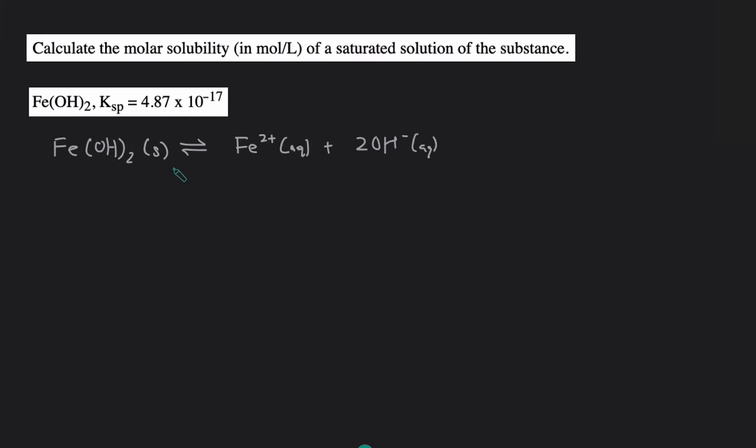The reason why the Fe is positive 2 charge is because the hydroxides each are negative 1 so that makes a negative 2 so the Fe has to be positive 2 to balance out the charge.